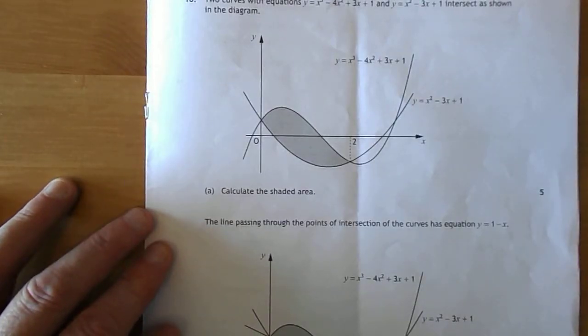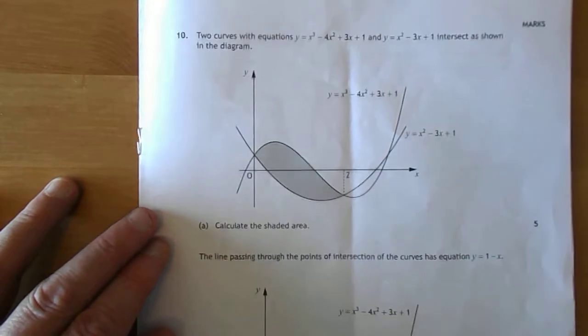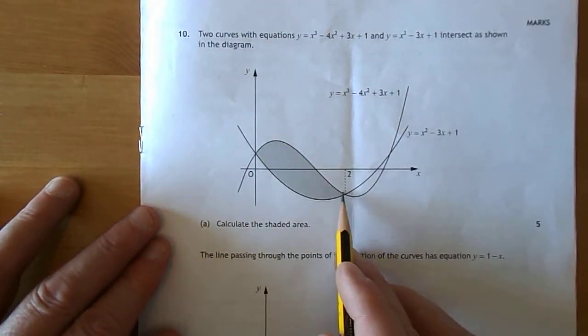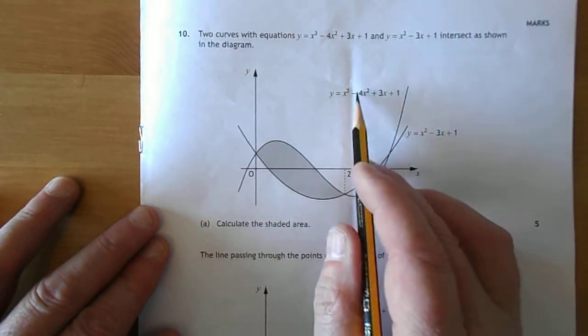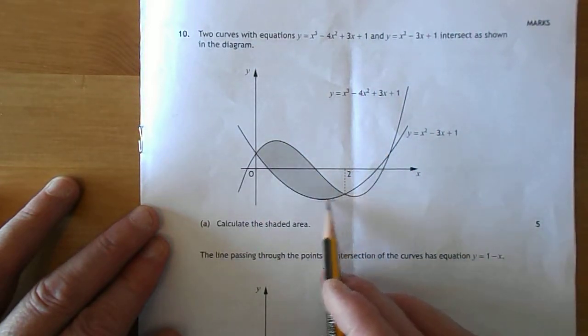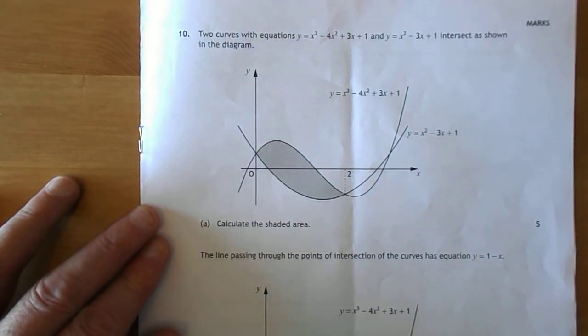Part A says calculate the shaded area. Well, the shaded area is the integral between 2 and 0, where they cross, of top curve, which is that one there, take away the bottom curve, which is the parabola.